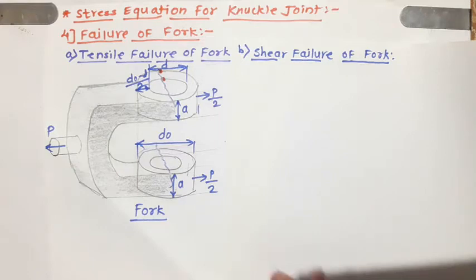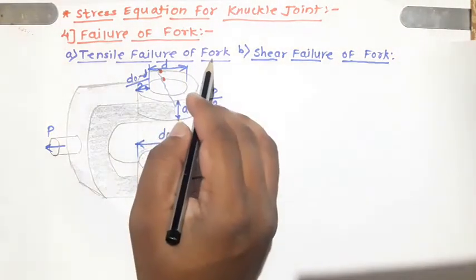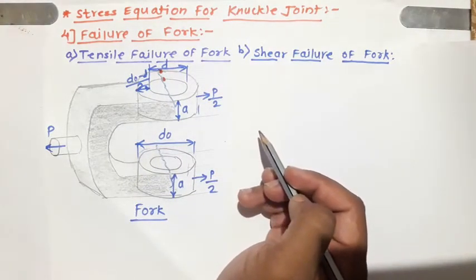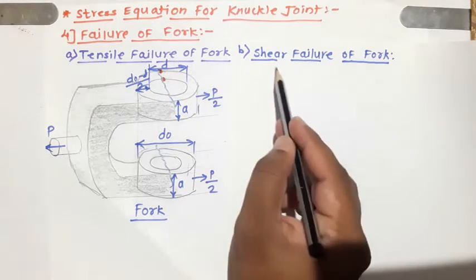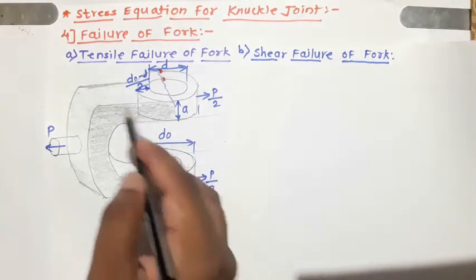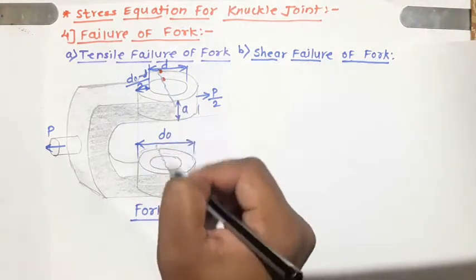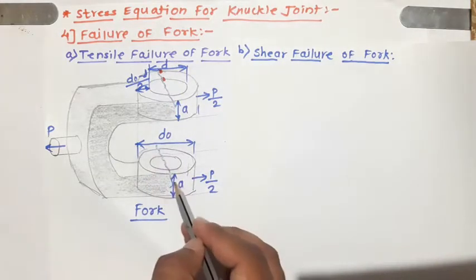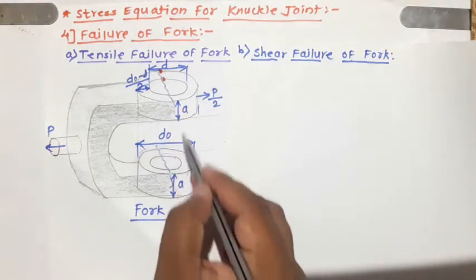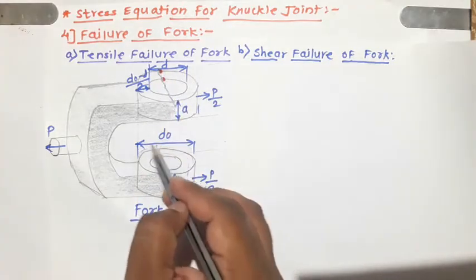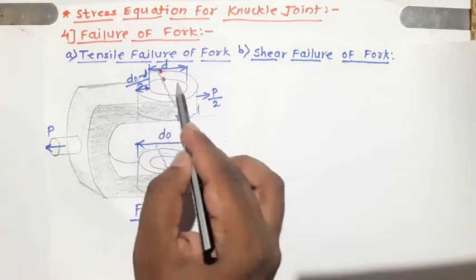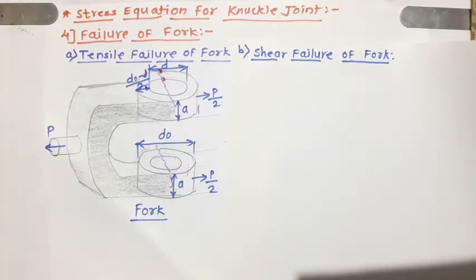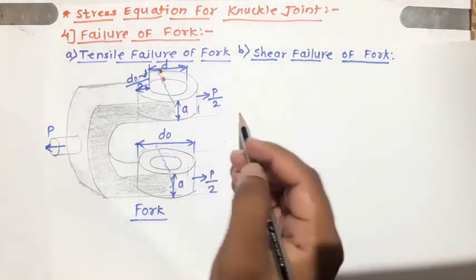In the last part we discussed the tensile failure of fork, where the equation of tensile stress was sigma t = p / (2a × (do - d)). Now let us discuss the shear failure of fork. This is the fork with two ends — a top end and a bottom end. The thickness of each fork end is 'a', the outer diameter is 'do', and the inner diameter is 'd'.